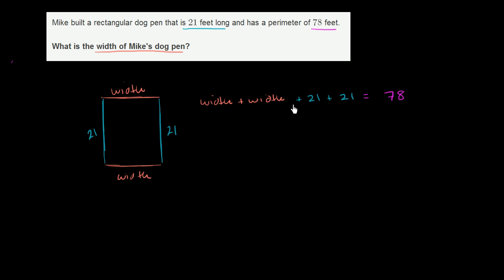Now, we could simplify this expression on the left-hand side a little bit. We know that the width plus the width plus the sum of the two lengths, which are both the same, so plus the sum of the two lengths, plus 42 is going to equal 78.